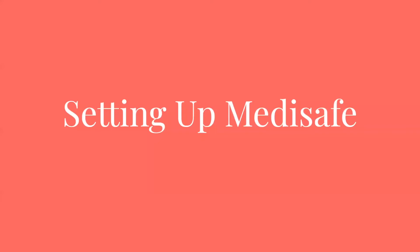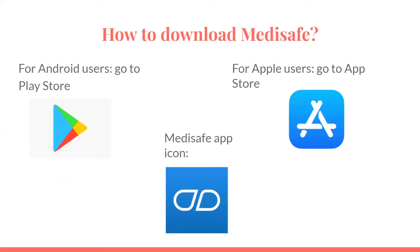Setting up MetaSafe. To download MetaSafe, you can download it from your Google Play Store — there is a picture of the MetaSafe app icon in the center. You can also get it from the Apple Store.